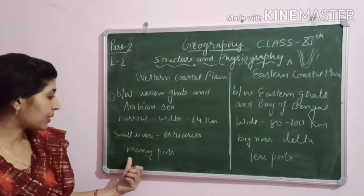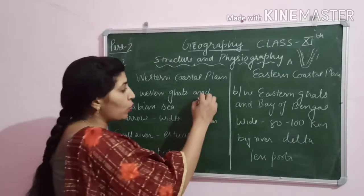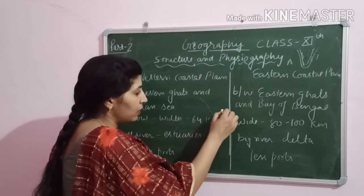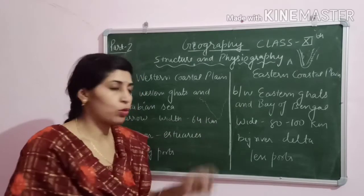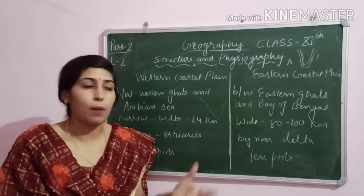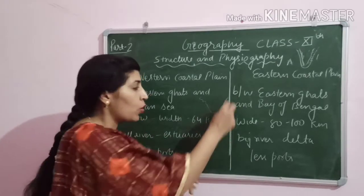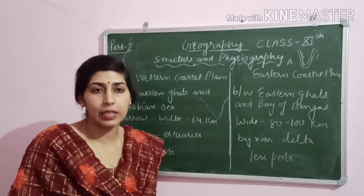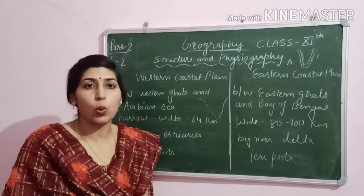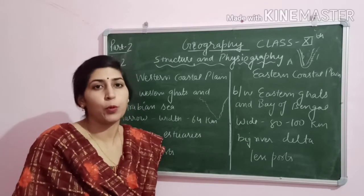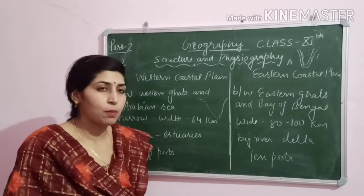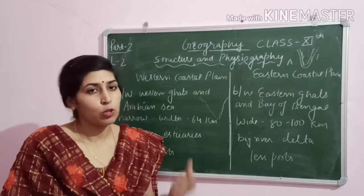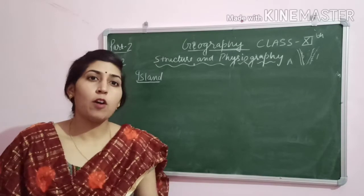In the western coastal plain there are many cuts along the coastline, which is why there are more ports there. By contrast, the eastern coastal plain has fewer such cuts, so there are fewer ports compared to the western coastal plain.